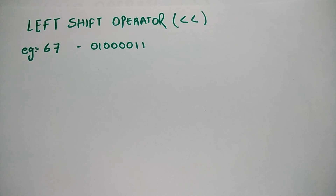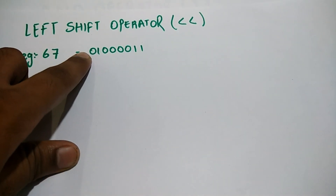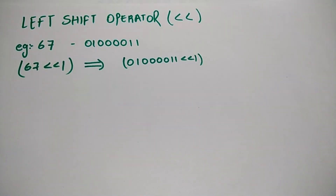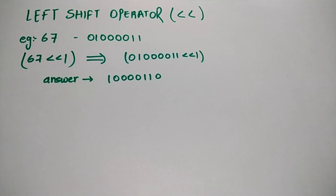Now we are shifting 67 towards the left. When we shift the number towards the left by 1 — or by any number of positions — the bit on the left-hand side is released, which is 0 as you can see on screen. A 0 is also introduced on the right-hand side. After shifting 67 by 1, you can see the 0 at the MSB was released and a 0 was introduced at the LSB. The output is 1000 0110. This is the left shift operator.